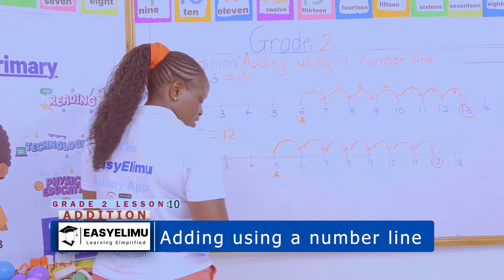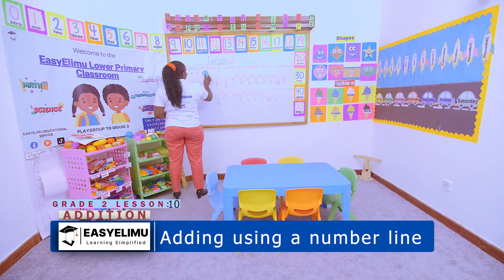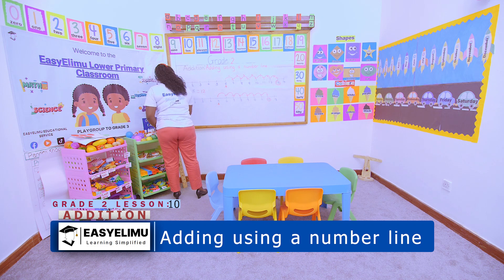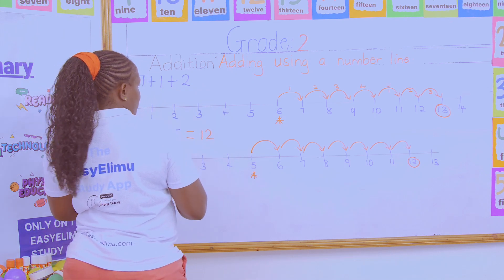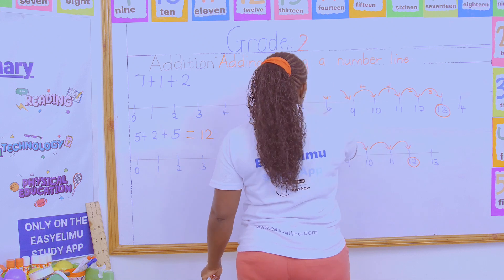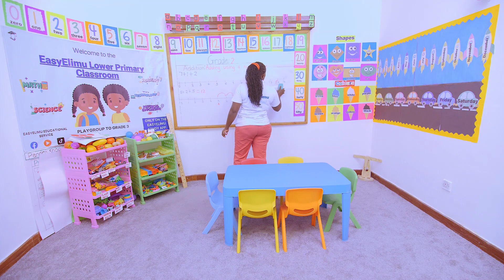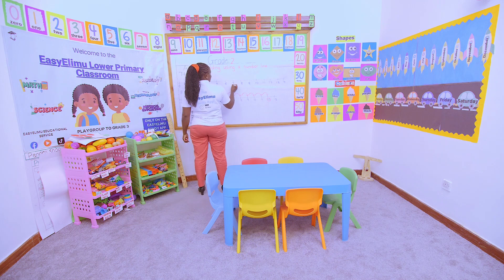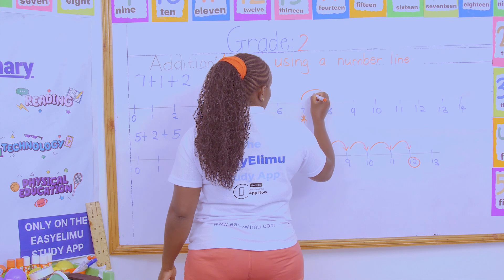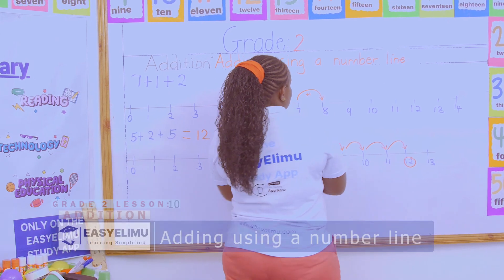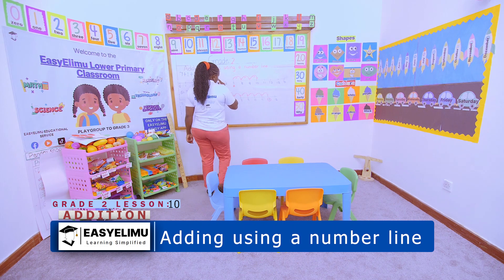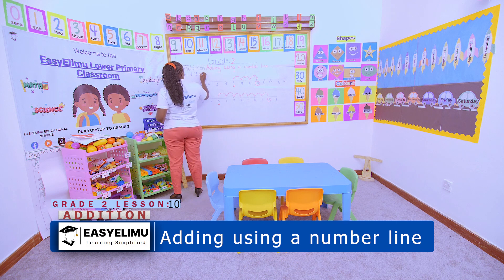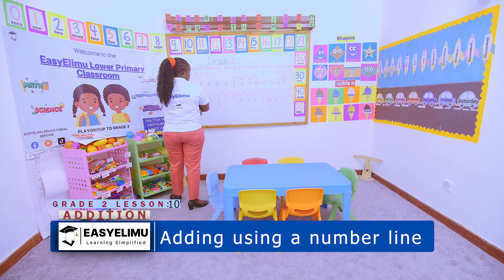Now, who can do this other example for us? I have seven plus one plus two. Which one will be our starting number? Our starting number here is seven. How many steps are we moving forward first? One step, then two more steps. Where did I stop? You stopped at 10. So seven plus one plus two equals 10.